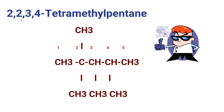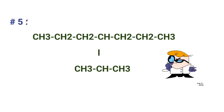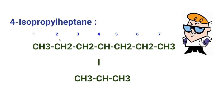Here is the fifth compound. A hint: this is an isopropyl group — three carbons attached at the second carbon to the longest continuous parent chain. Write down the name. The answer is 4-isopropylheptane, because the isopropyl group is attached on the fourth carbon and the longest continuous chain consists of seven carbons.